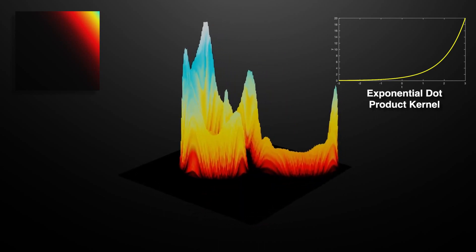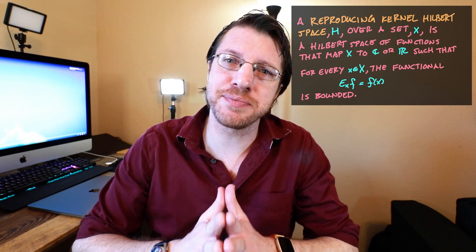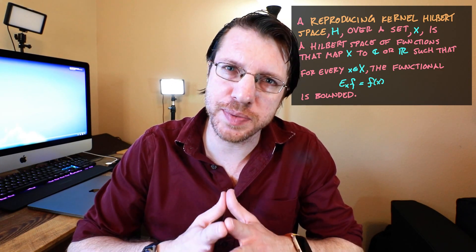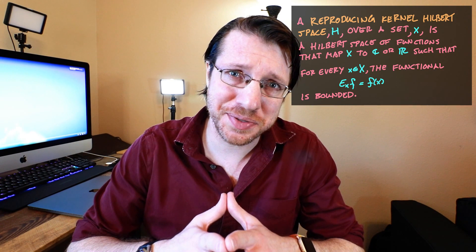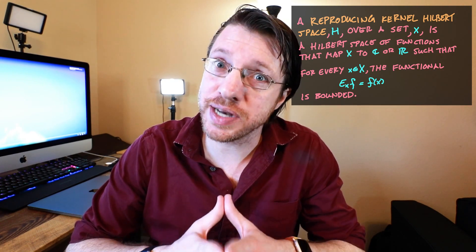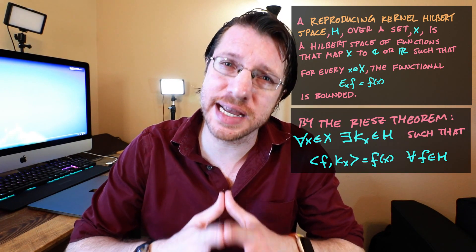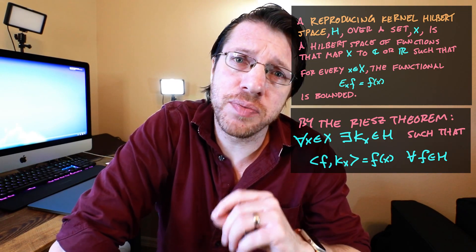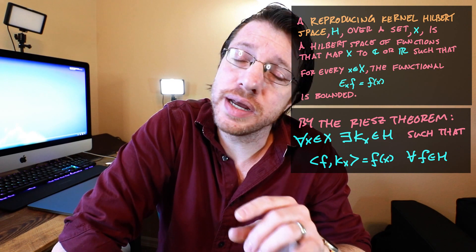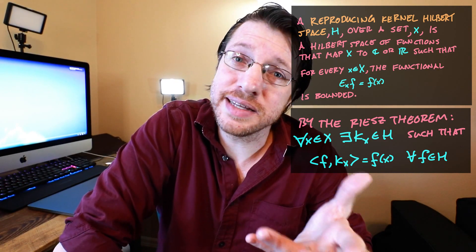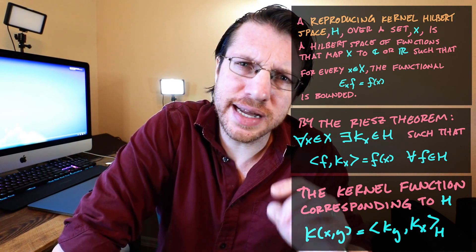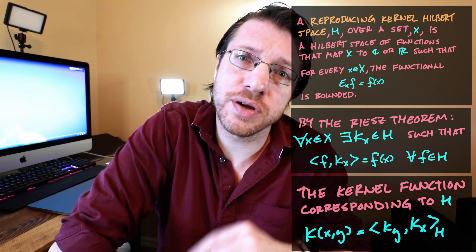Now let's see the formal definition of the occupation kernel. A reproducing kernel Hilbert space is a space of functions mapping a set X to the complex plane or the reals. The key property is that for every x in X, the functional mapping functions to their evaluation at x is a bounded functional. The Riesz representation theorem then tells us there is a unique function inside our space — a kernel function centered at x — such that taking the inner product of f against that kernel function returns the evaluation of f at x. These kernel functions can be combined through an inner product to make the full kernel, and there is a unique identification between the kernel function and the reproducing kernel Hilbert space it comes from — the Aronszajn–Moore theorem from the 1950s.